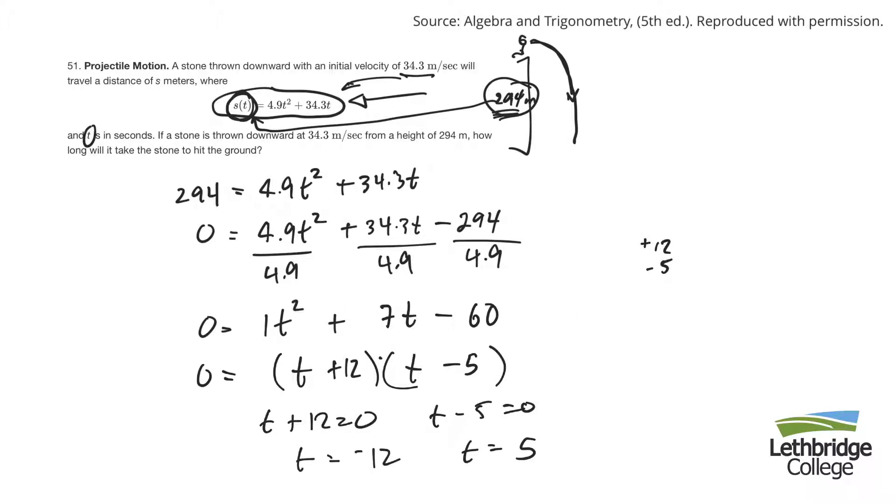So a negative time doesn't make sense. That would be if this parabola was extended over this way. But that part doesn't make sense because I've got the stone up there. So this part here makes sense. The time, how long would it take the stone to hit the ground? Five seconds.